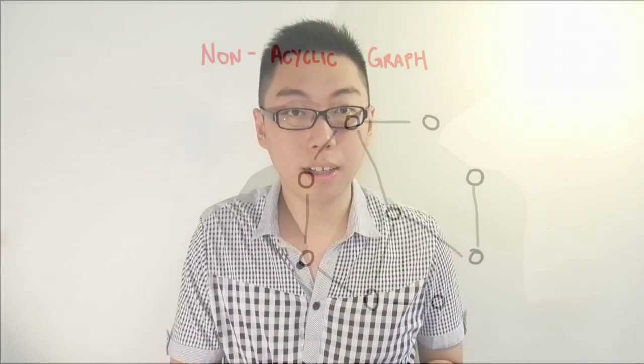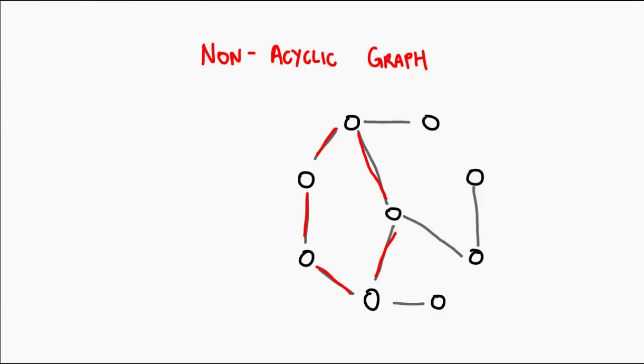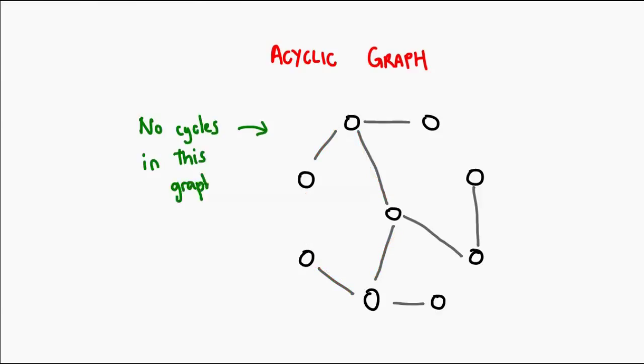Next we can talk about acyclic graphs. If a graph does not contain a cycle, then it's acyclic. As you can see in this graph, it is not acyclic because there is a cycle here. This might be a little non-trivial because finding a cycle isn't always easy, especially if the graph is large. But understand the concept that acyclic graphs can be useful.